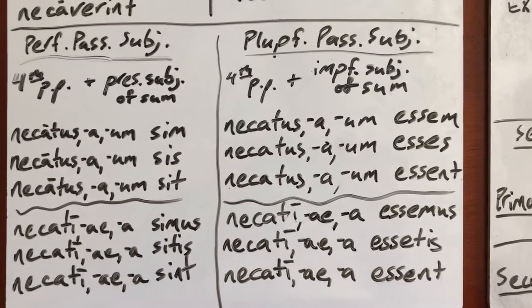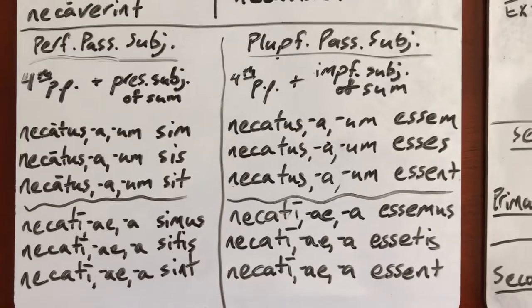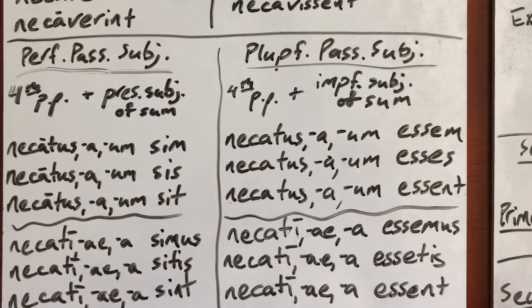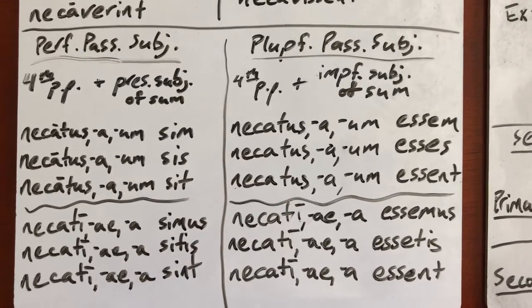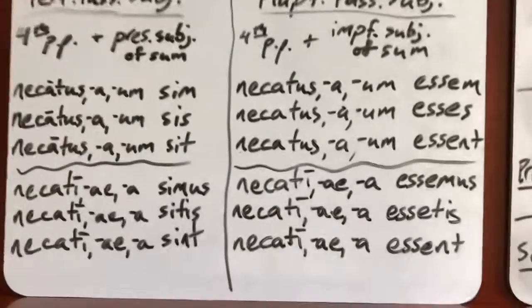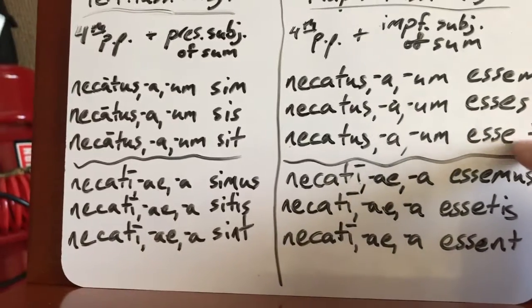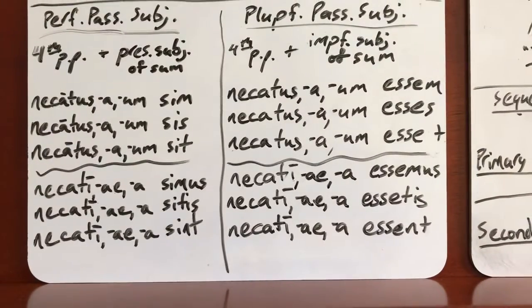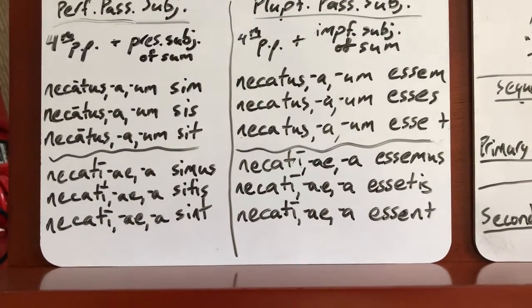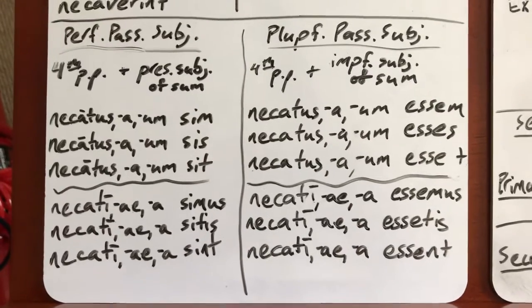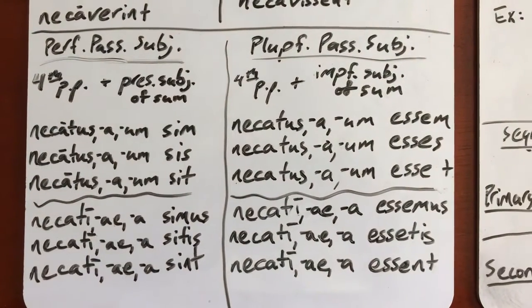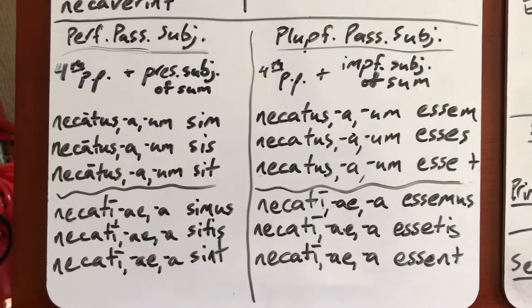For the pluperfect passive, you start the exact same way — necatus — and then instead of sim, you're going to add essem. Essem is the imperfect subjunctive of sum. So: necatus essem, necatus esses, necatus esset, and then necati essemus, necati essetis, necati essent. Same thing: us and e if your subject is masculine, a and ae if feminine, and um and a if neuter. So those are your charts, and as I said they work the same for all conjugations, which is really nice.